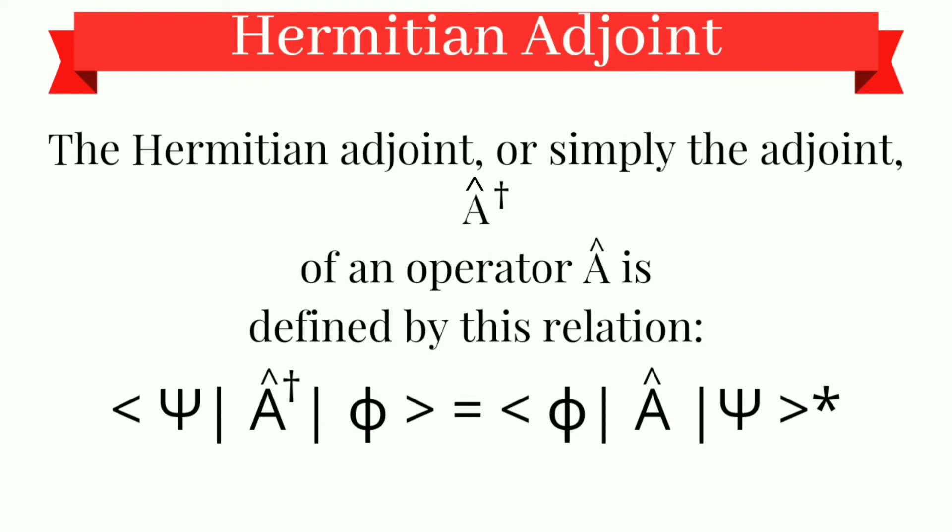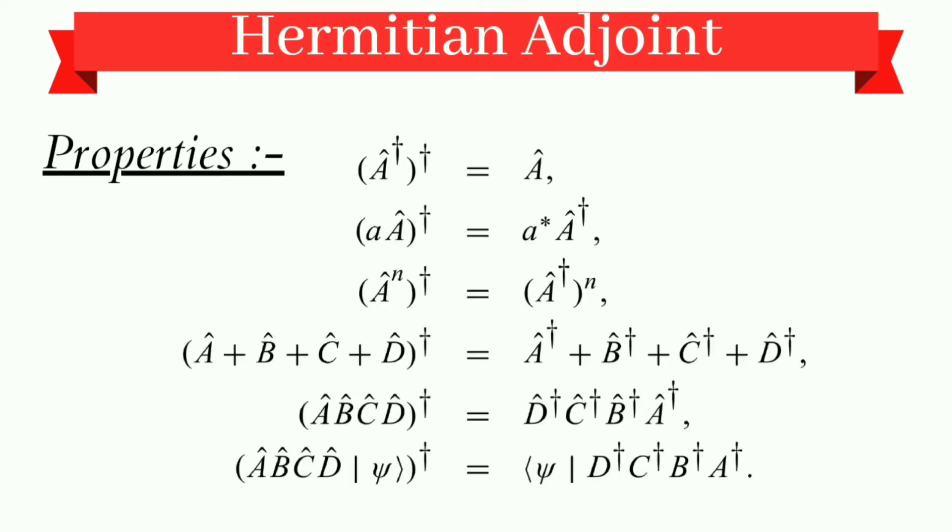Now, the Hermitian adjoint, or we can simply say adjoint, that is A operator dagger of an operator A, is defined by this relation. So this relation is the Hermitian adjoint of operator A.